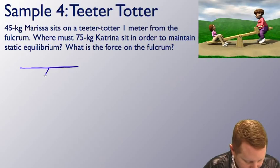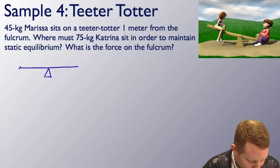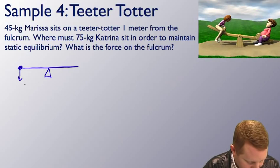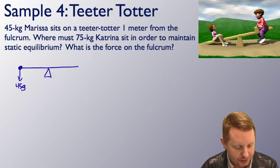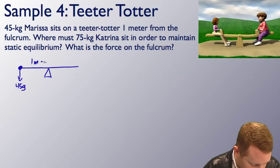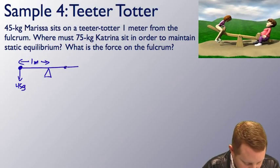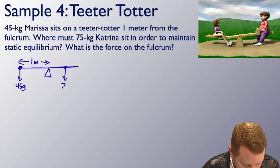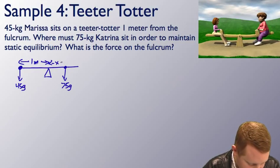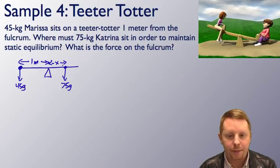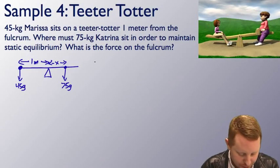There's our teeter-totter. We've got a fulcrum there. And we have Marissa over here on the left-hand side with a force of 45 times g, 45 kg times g. And that's at a lever arm of 1 meter. And over here on the right, we have Marissa with a force of 75 g at some distance x from the fulcrum.